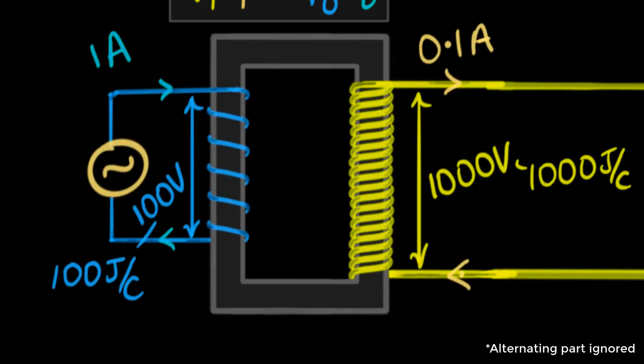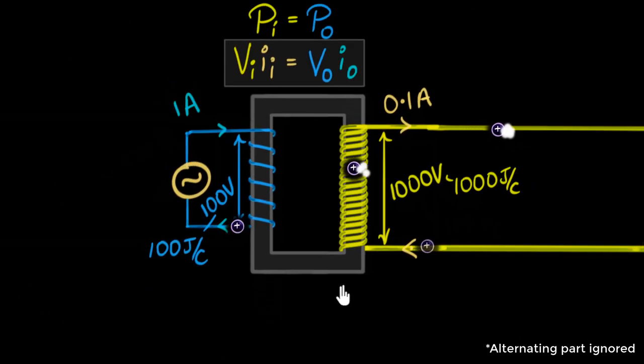And of course something similar is happening near the power station side as well. Because we are stepping up the voltage, this time it's the coulomb that is receiving the energy that is traveling slower because it is receiving way more energy than the coulomb over here can give, and so stepping up the voltage has to decrease the current.